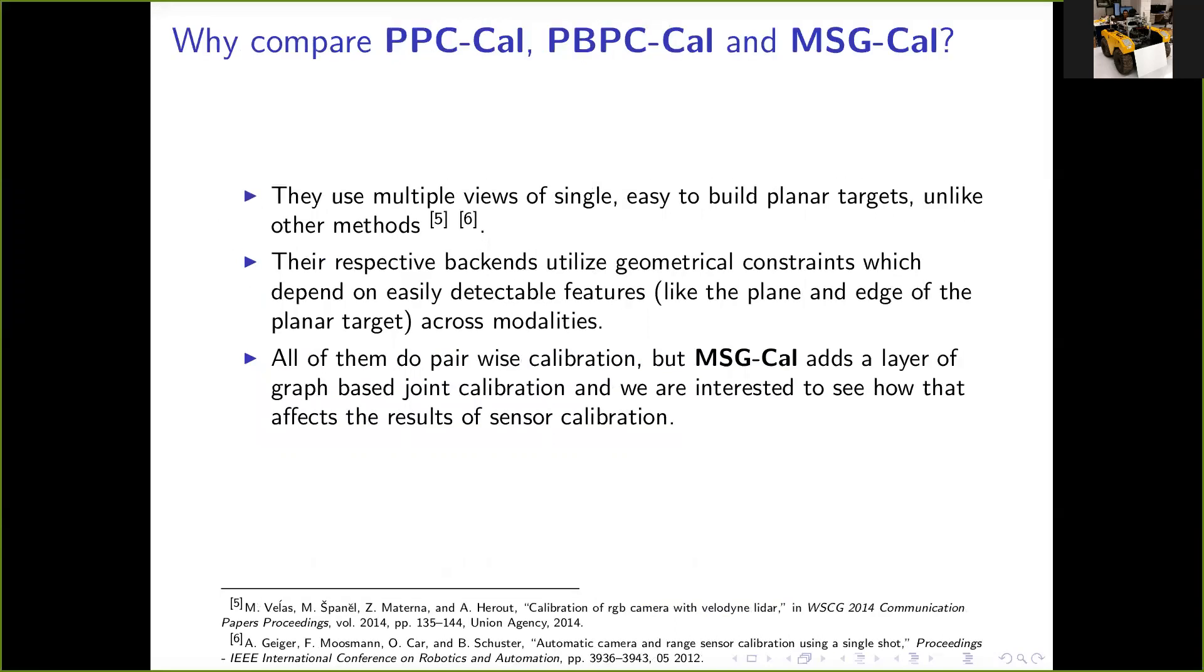Why, after all, we pick these three algorithms for comparison? First, like stated earlier, these methods use easy-to-build planar calibration targets, unlike some other methods which depend on multiple targets or complicated targets, and maybe sometimes both. Our goal is to compare methods which can be used without depending on complicated paraphernalia. Secondly, their respective optimization backends utilize easy-to-detect geometrical features, like planes and lines, along all the sensing modalities. Lastly, we choose MSG-Cal because it's a graph-based calibration method, and we wanted to see how a graph-based approach performs differently from pairwise calibration methods.